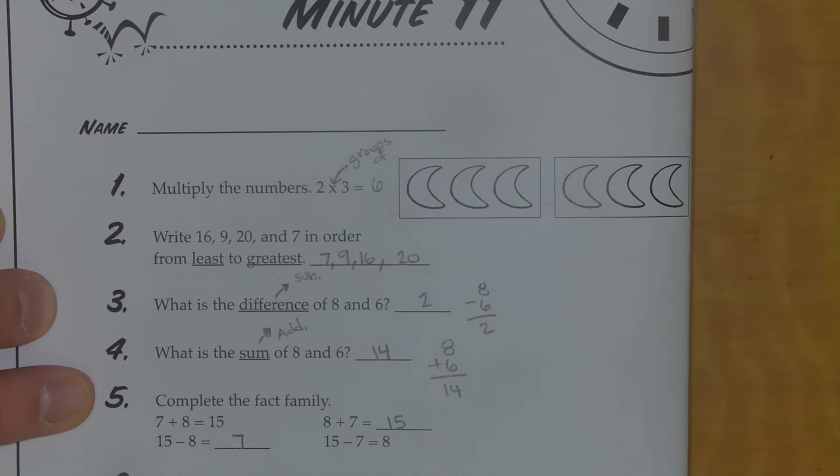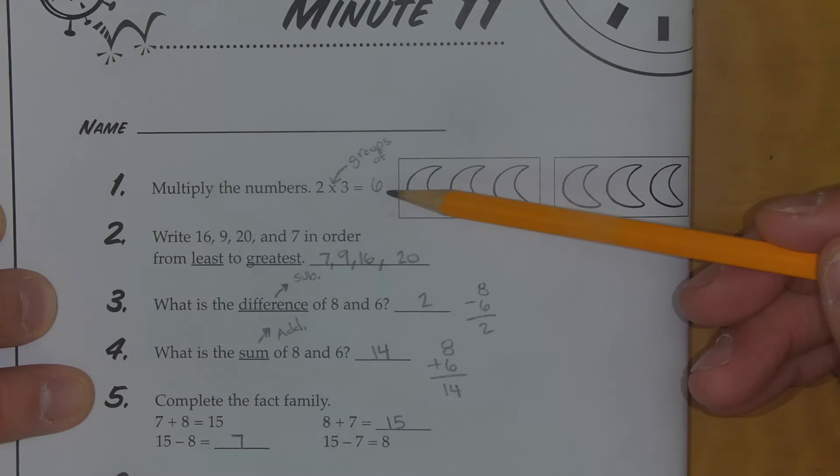Now that you're back, this is what your page should look like so far. 2 groups of 3 is 6, so 2 times 3 is 6. There's 6 crescent moons here if you add them all together, or they look like bananas, I guess, too. Whatever it is you want to imagine there.